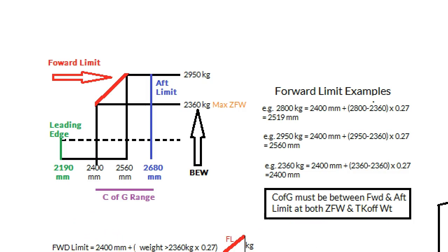Now what we've done is we've done the maths down here. So the forward limit is going to equal 2400 plus the weight minus 2360 times 0.27. Now we work that out by using this type of simple maths. They really should be in brackets, but X over Y, come up with that number, so that we can work out what the relationship was.